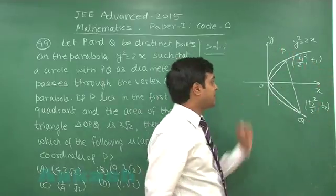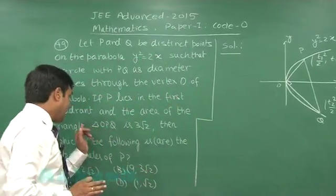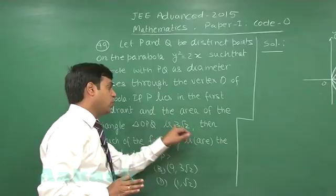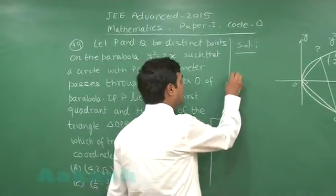Obviously, t2 will become negative in this case. Now, it is given that the area of the triangle OPQ is 3 root 2. So, let us find the area of the triangle OPQ.